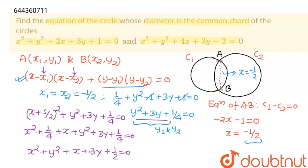If you want to write this in another form, multiply the whole equation by 2 on both LHS and RHS. You get 2x² + 2y² + 2x + 6y + 1 = 0. And this is the equation of the circle whose chord AB is the diameter.